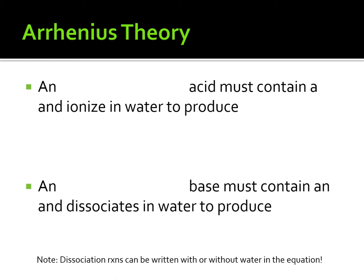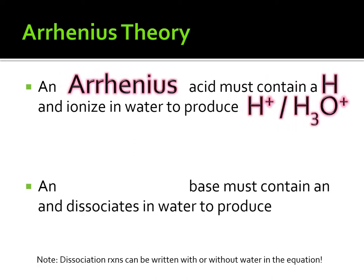One last thing to do is fill out the bottom of your graphic organizer on the left-hand side — you'll see a box that says Arrhenius theory. We're going to define acids and bases using the Arrhenius theory as simply as possible. An acid, according to Arrhenius, is a compound that starts with the letter H, meaning it will produce hydrogen ions — or hydronium ions, H3O+ — when dissolved in water. So to summarize: an Arrhenius acid starts with an H.